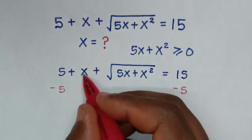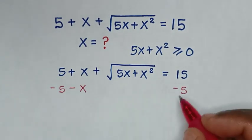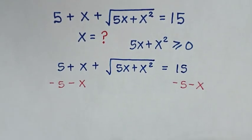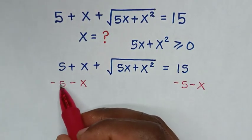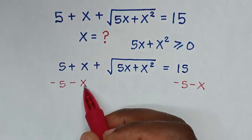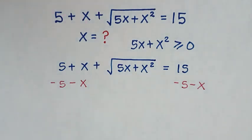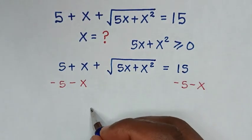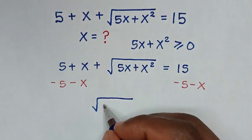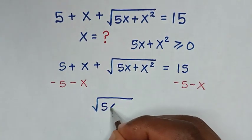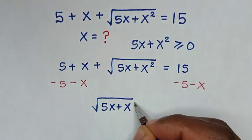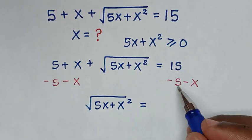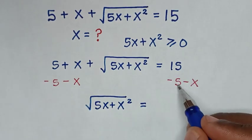then we subtract x from both sides. 5 minus 5 is 0, x minus x is 0, so on the left side it will remain: square root of 5x plus x square is equal to 15 minus 5 is 10, then minus x.